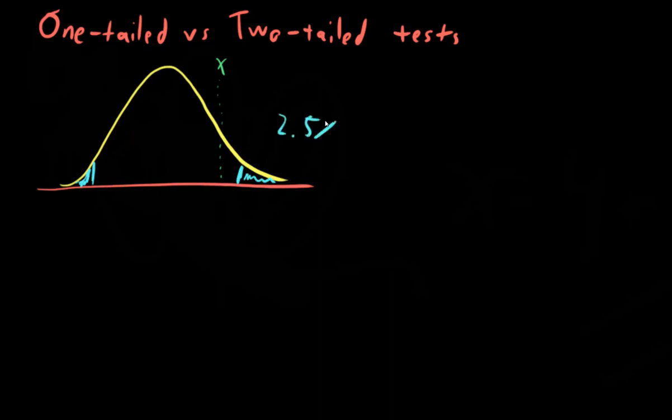2.5% of your power goes here, assuming you're talking about a 5% confidence interval, and 2.5% of your power goes here. And so if x falls in this area or this area, then we can say that x is statistically significantly different than the mean of this distribution. That's what a two-tailed test is capable of doing.